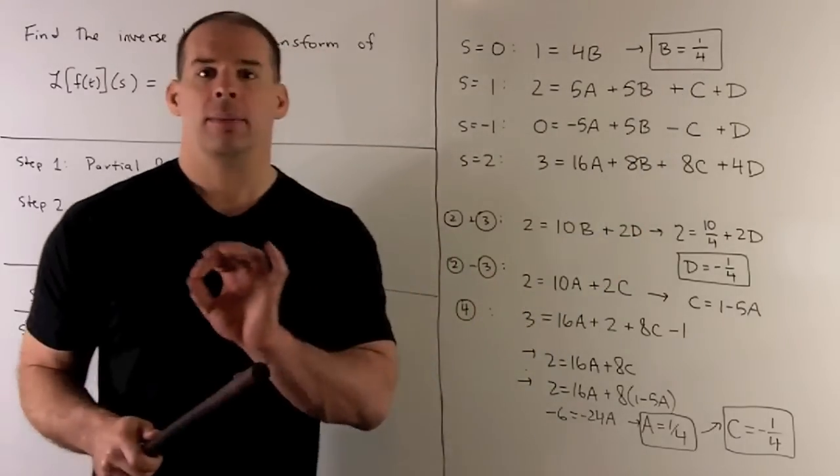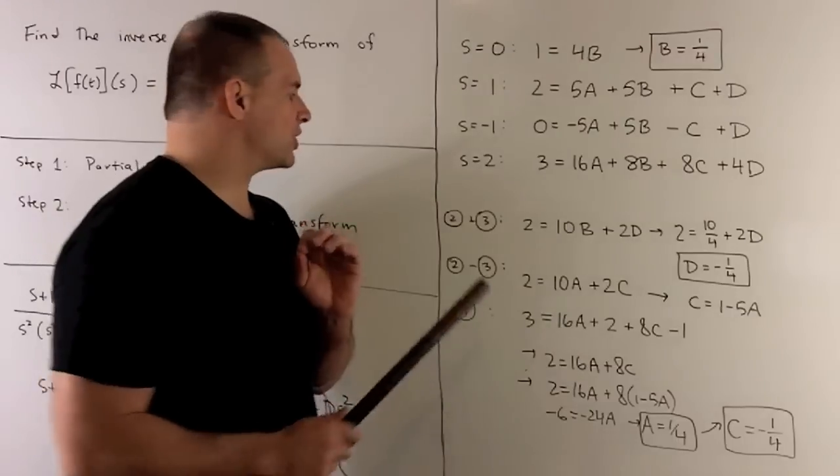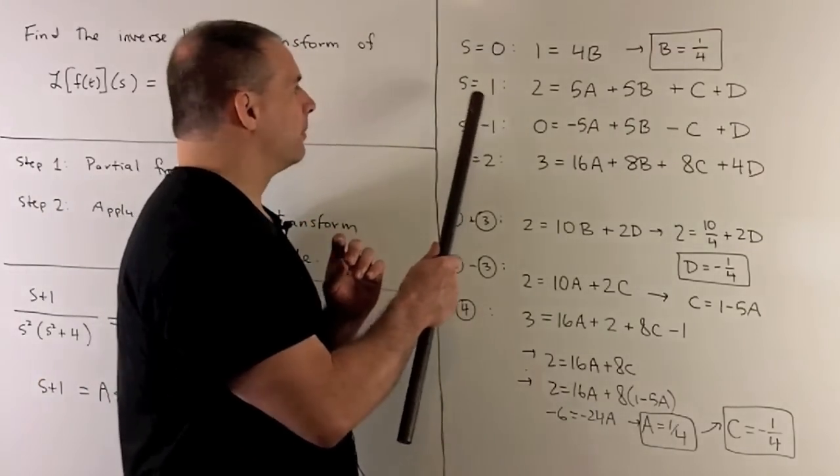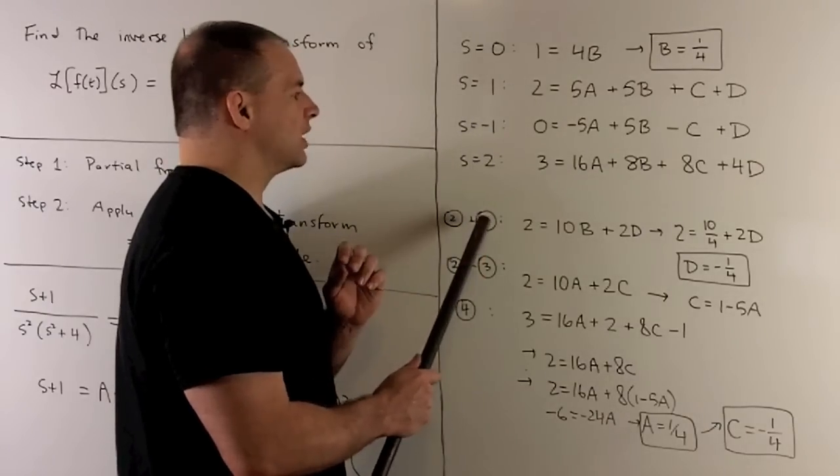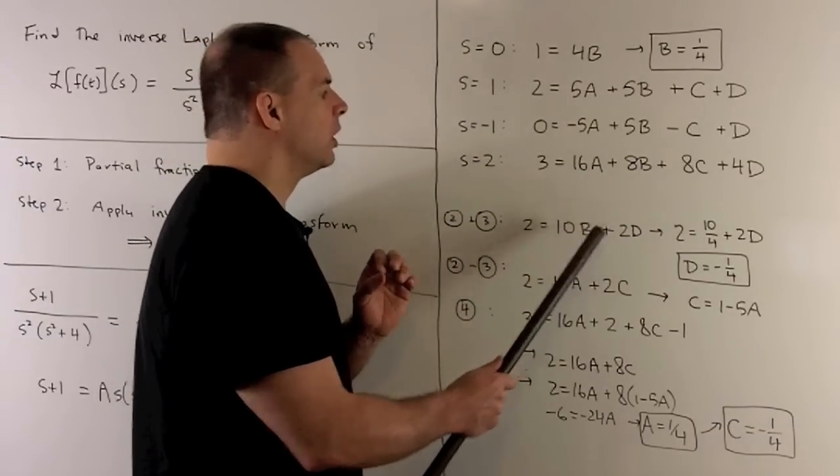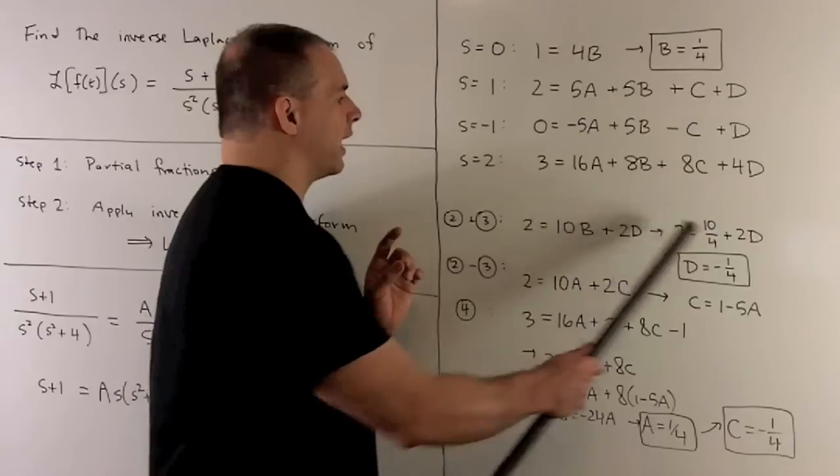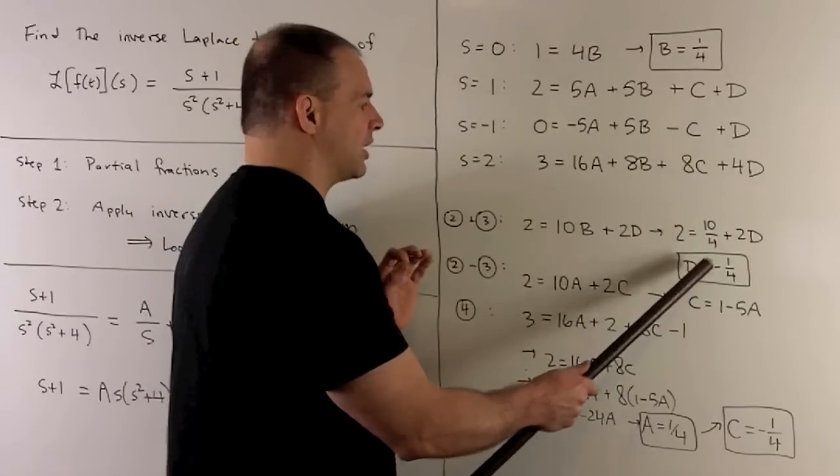And then, we're just going to mill around until we can find the other three. Now, first step I'll do is, taking a look at equation two and three. Note, if I add those together, I'm going to have an expression in terms of B and D. We already know what B is, so I can solve for D. So, when I work that out, I get D equal to minus a quarter.